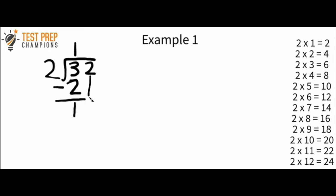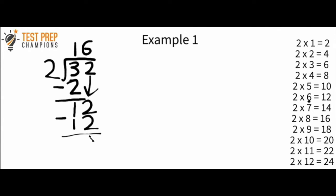Now I take this 2 and bring it all the way down. I now have 12. The next thing I want to ask myself is how many times will 2 go into 12? Looking at our times tables, 2 times 6 gives me 12. So I put a 6 right here. 2 times 6 is 12, so I write 12 down here. 12 minus 12 is just 0, so I don't have a remainder. These are tricky, so we're going to walk through a bunch of examples — the repetition is really going to help you out.